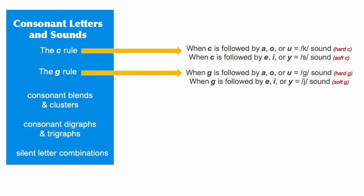When C or G is followed by E, I, or Y, then it makes a soft C sound like S or a soft G sound like J.